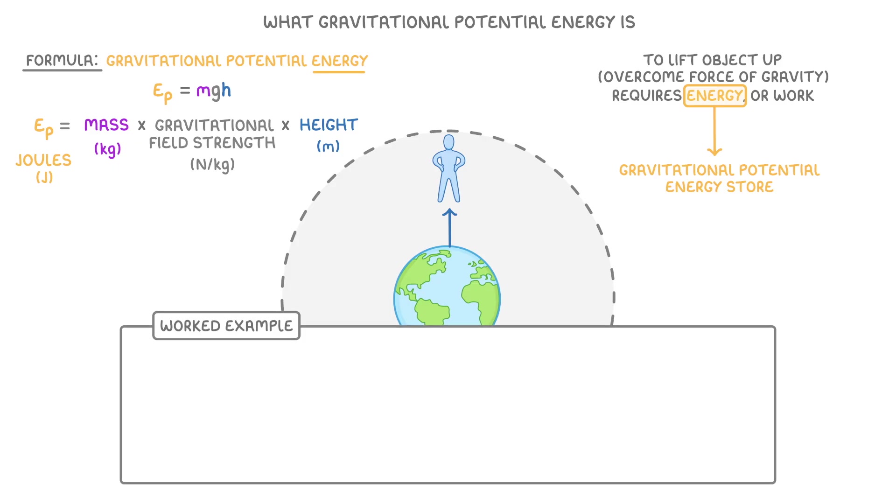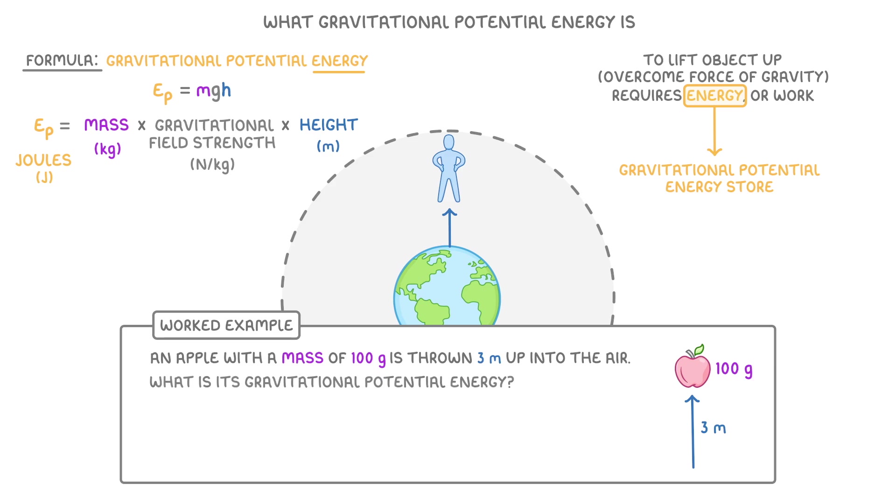Let's do a quick worked example using this formula to see how it works. An apple with a mass of 100 grams is thrown 3 meters up into the air. What is its gravitational potential energy? First, we need to grab our equation and make sure all the values are in the right units.